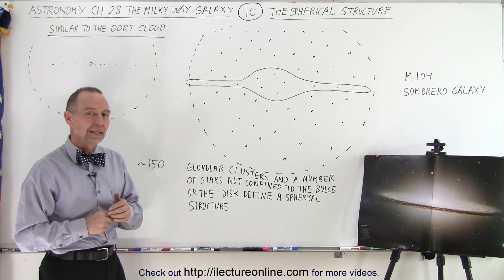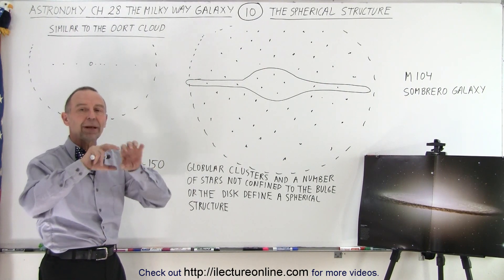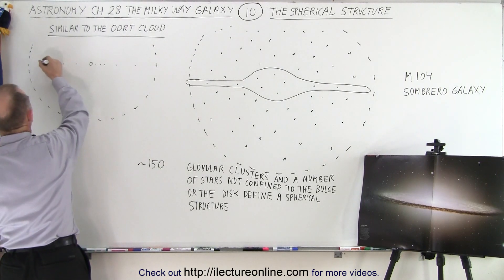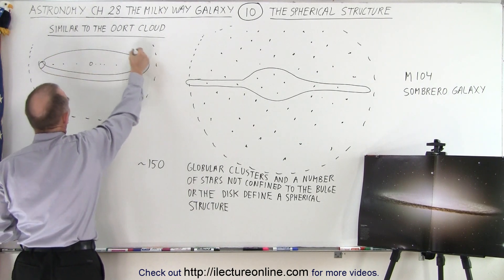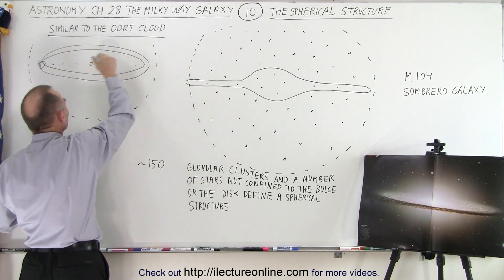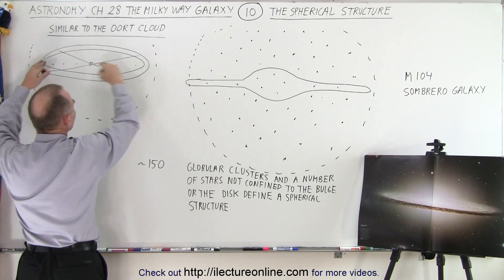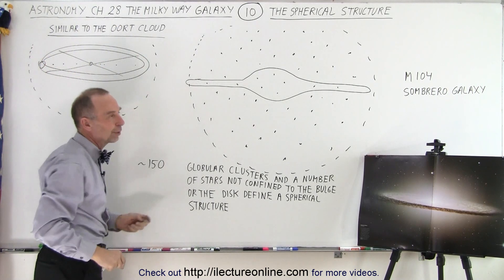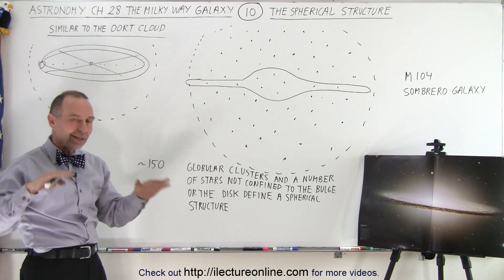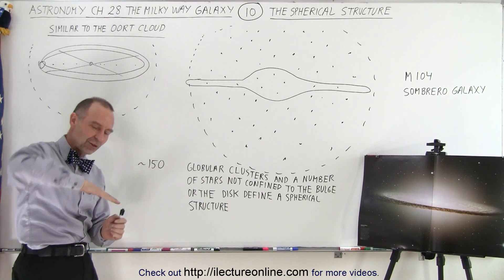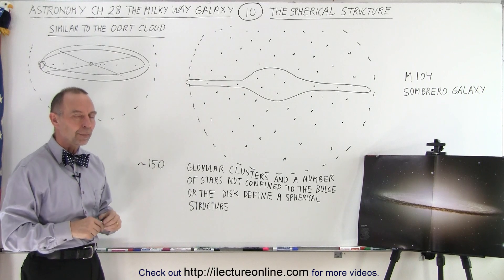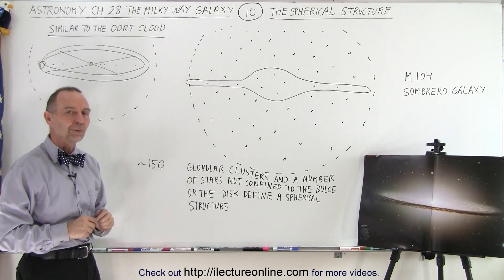Question: Did you say the Oort Cloud was a donut shape? The Oort Cloud is actually a spherical region. It's the Kuiper Belt that is the donut-shaped region. The Kuiper Belt is inside, forming a donut-shaped ring more or less in the same plane as the planets — with some exceptions, like Pluto, which is angled at 17 degrees. But more or less, the Kuiper Belt is in the ecliptic plane region of the solar system, while the Oort Cloud is a complete spherical region, just like the structure of the galaxy.